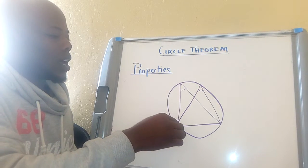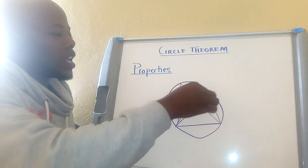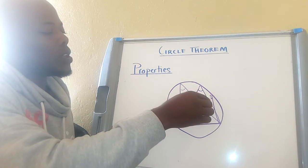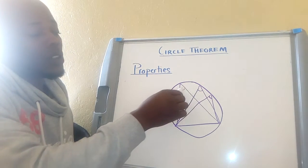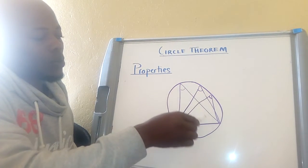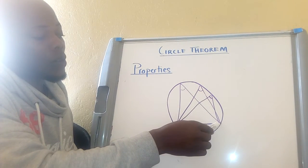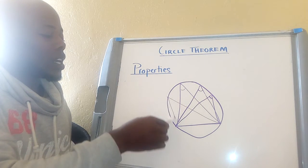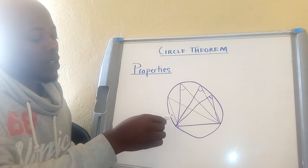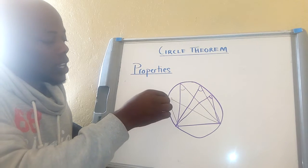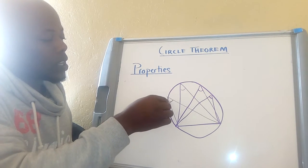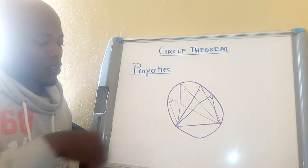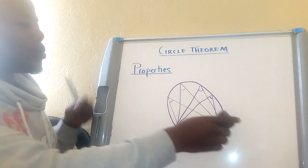This angle will be equal to these two because they are all coming from the same segment. Even if you add another angle like this, it will also be equal to the other angles. That is property number one.